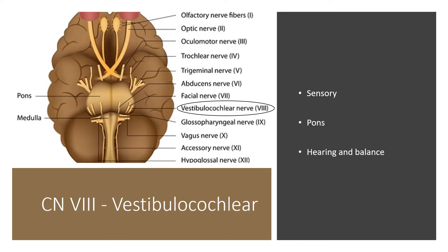Cranial nerve 8 is the vestibulocochlear nerve. It has a sensory function only, is located at the pons, and is involved in hearing and balance.